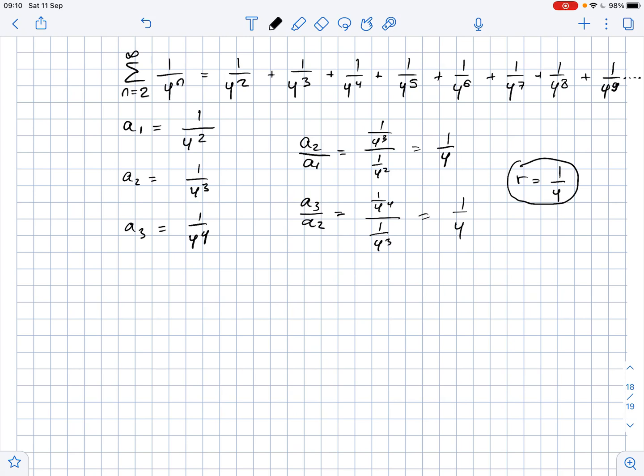Since this is an infinite geometric series, we can use the formula of the sum of infinite geometric series to find its sum. So the formula states that the sum equals A over 1 minus R, where A is the first term and R is the common ratio.